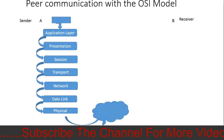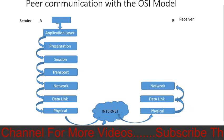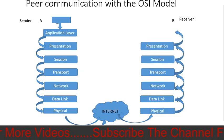The message passes through the internet and then the receiver starts to receive. The same steps are followed in reverse — from physical layer up to application layer. So sender goes application to physical, and receiver goes physical to application layer, and the information is delivered.